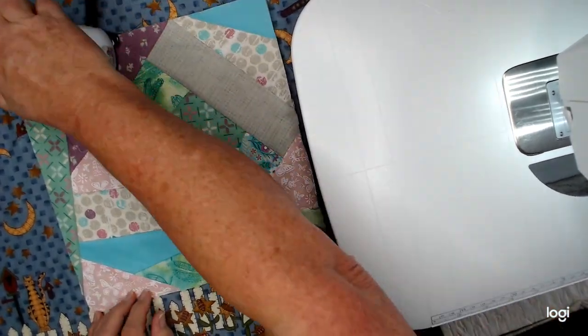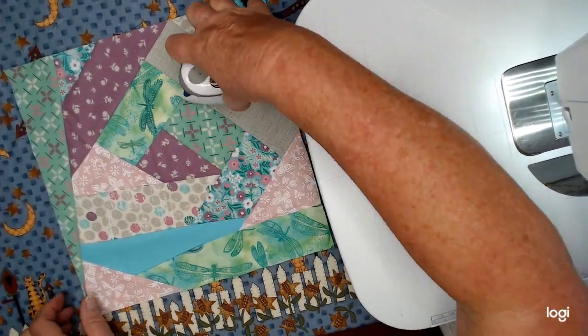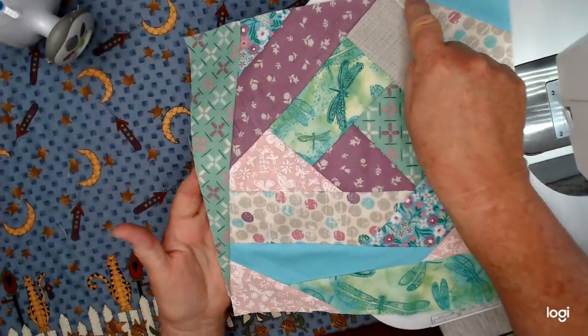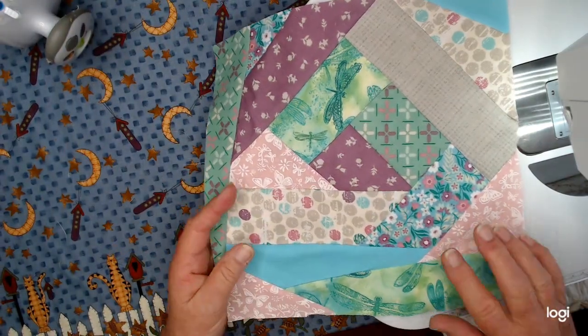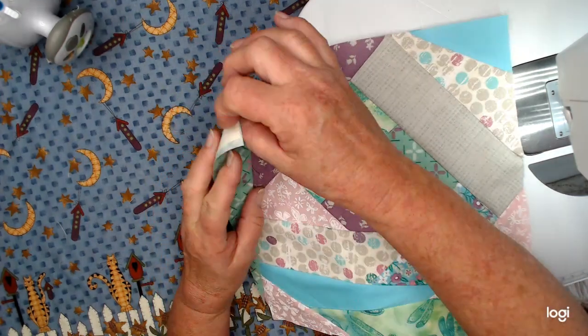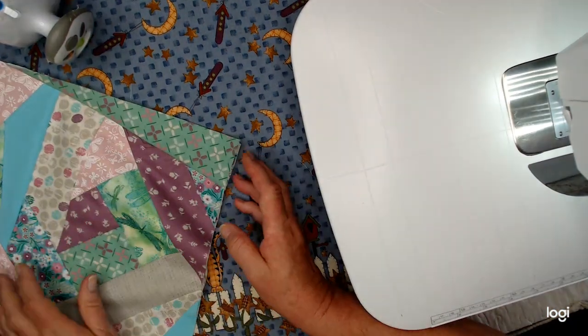There we go. I'm going to give it one final press. And then the last thing I'm going to do is I'm going to take it to my machine and I'm just going to stitch around the edge, just kind of like a basting stitch. I usually use a large stitch for that, just to hold all the layers together. Oh, that's something else I was going to show you.